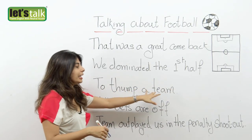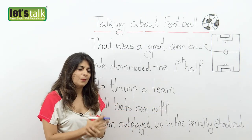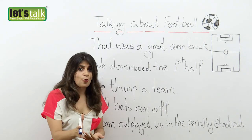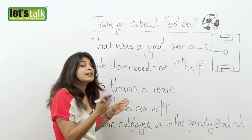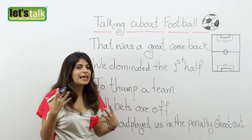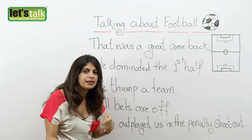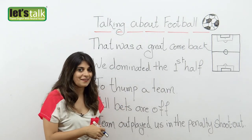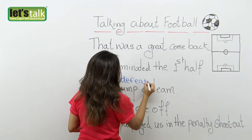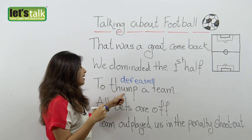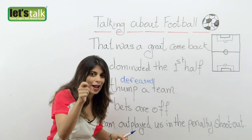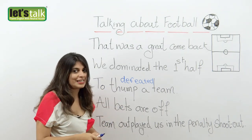Next is 'to thump a team,' which means to defeat a team. If you are supporting a team that has won, you can say we thumped the team — it was a pretty easy game and we defeated them. We thumped the opponents. You can also say we thrashed the team, meaning not literally thrashed, but defeated the team.